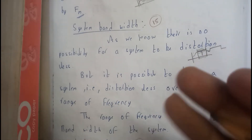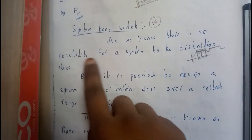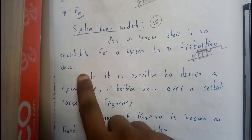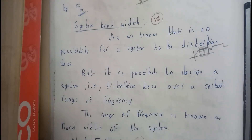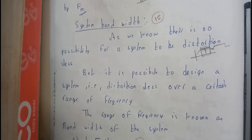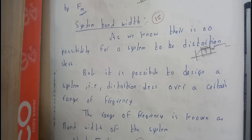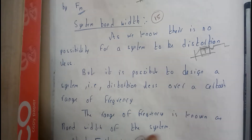So that is the system bandwidth. There is no possibility for a system to be distortion-less overall, but it is possible to design a system that is distortion-less over a certain range of frequency. It works with almost 100% efficiency in that particular range. For example, if we give a frequency from 99 to 150, it works absolutely perfect, and outside that range it will have some distortion. This range is called the bandwidth of the system.